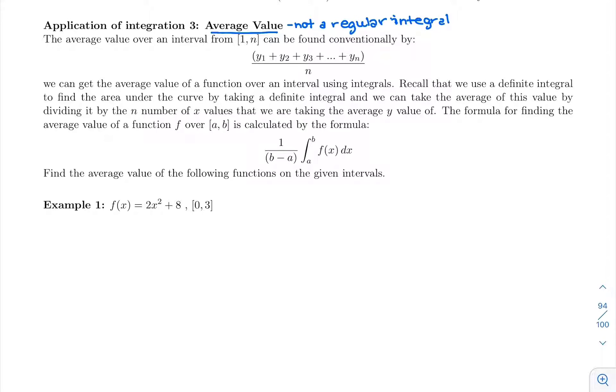Average is taking a total, so the integral measures net change or total change, and then we're going to divide it by the number of numbers, which is basically what this paragraph explains.